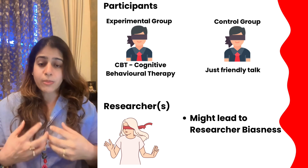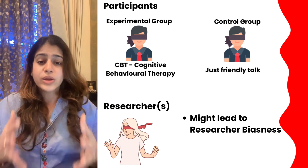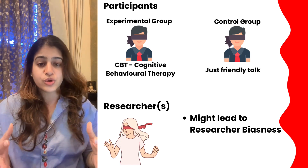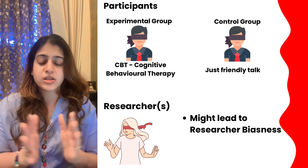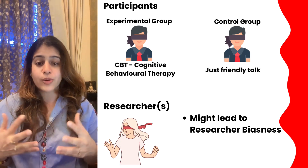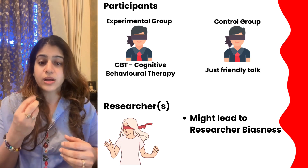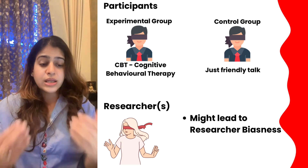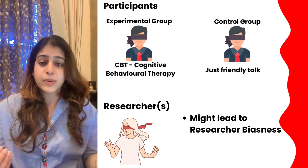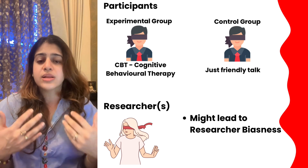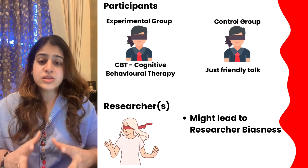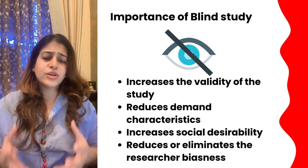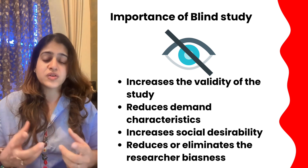My behavior as a researcher can get altered because I know this participant is in the CBT group or this one is in the control group, which can also hamper the results of my study. So in double blind study, both the participants and the researcher do not know which participant is in which condition. For example, with a real drug versus a dummy pill — neither the participant nor the researcher knows who received which pill, controlling researcher bias.